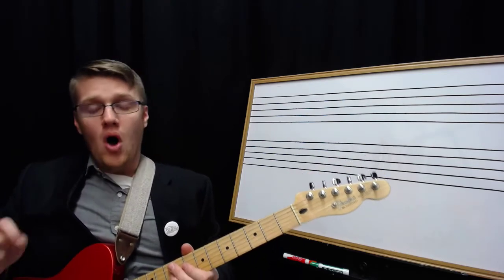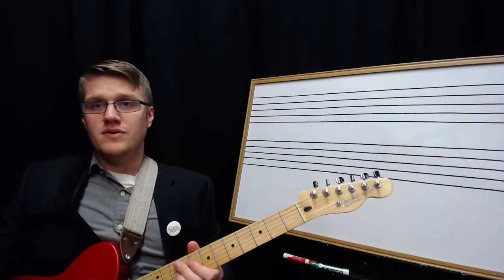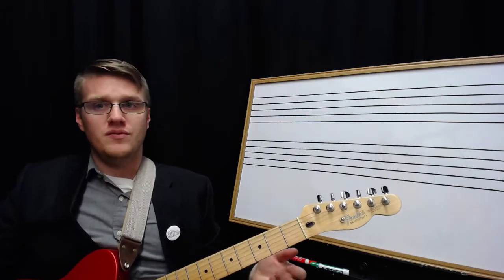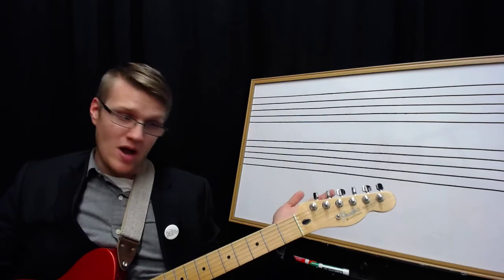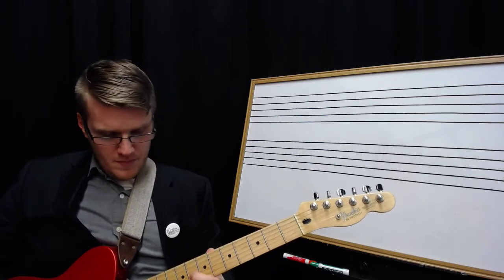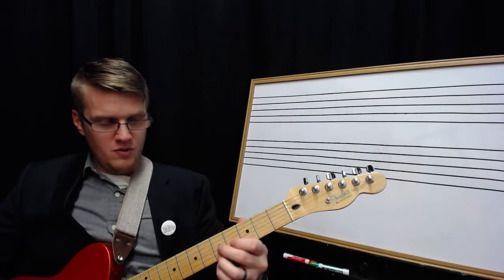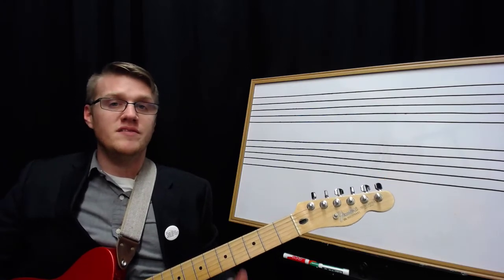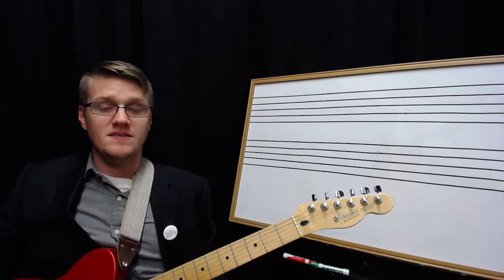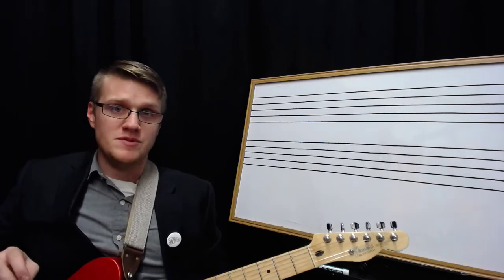So do that through all of the triads in every quality. So like you could do it for your A diminished triad. You want to make sure you do these completely and slowly so you can understand this. This takes a long time to master.